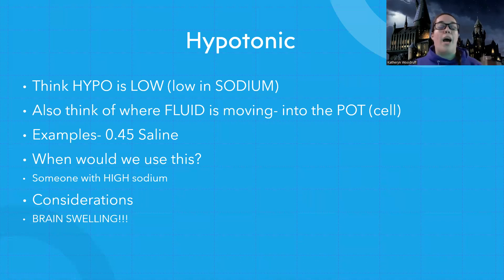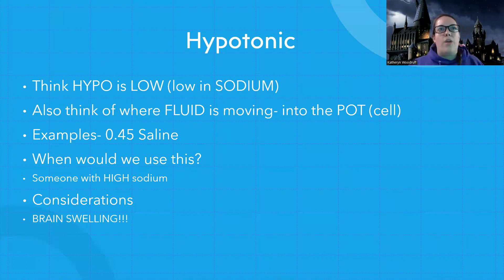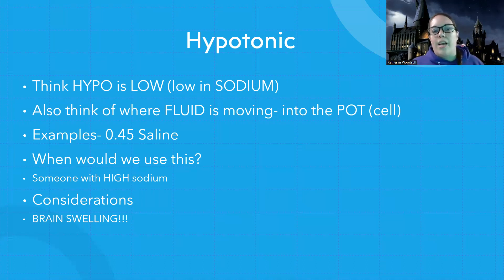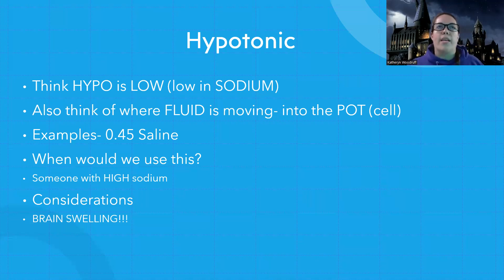So you always want to think about where fluid is moving. With hypotonic — when I give someone hypotonic fluid, fluid that doesn't have a lot of sodium — what happens is it dilutes what's in the bloodstream, and then things start moving towards the cell. So when you give a hypotonic, depending on the quantity, fluid actually starts moving into the cell. Think of POT — in hypotonic, it's moving into the pot, or into the cell. This is great for someone who has high sodium, and that's most of the time we use it.